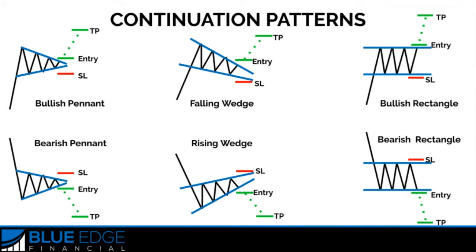Next, we have the continuation chart patterns, which means that the formation of one of these patterns signals that the trend is going to continue in the same direction. These patterns are also known as consolidation patterns because it's just a moment in the uptrend or downtrend when the buyers or sellers are taking a short break and then they're going to continue to push further in the same direction. Continuation chart patterns include the wedges, rectangles, and pennants. You may have noticed that the falling wedge and rising wedge appeared in the reversal section as well — that's because they can be reversal or continuation patterns depending on the trend on which they form.